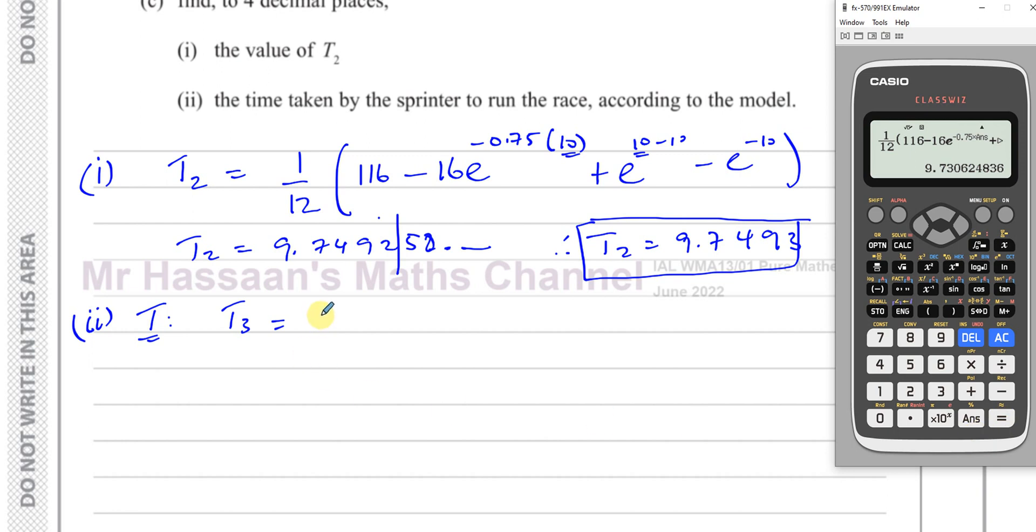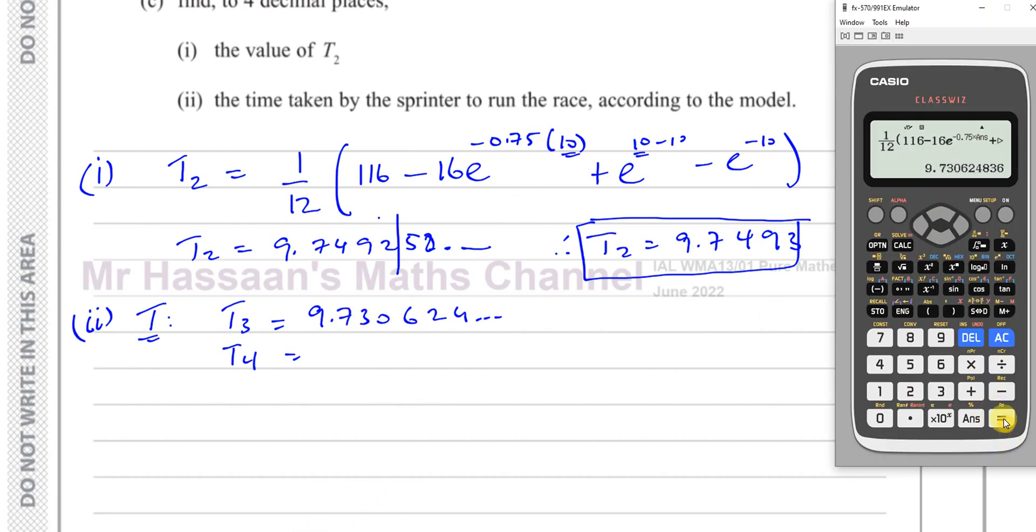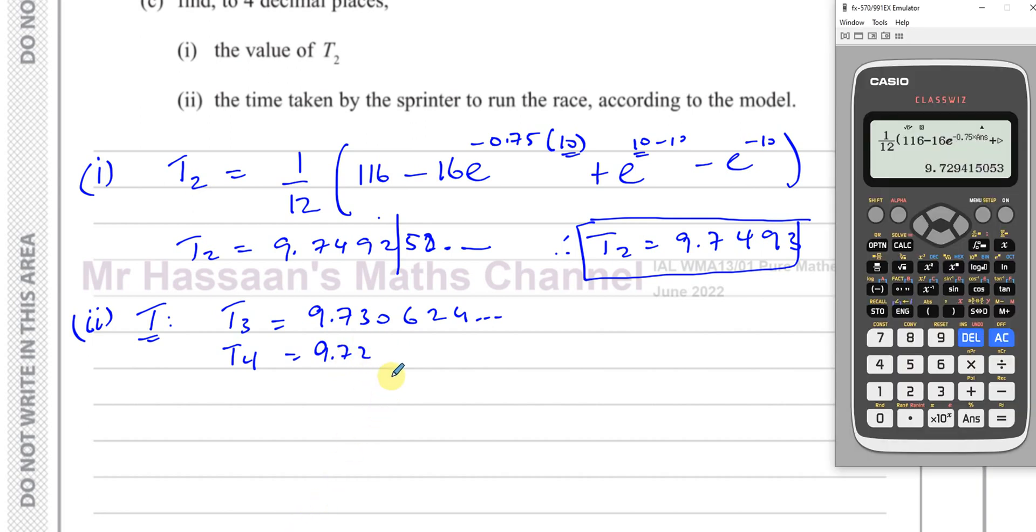So now I've got 9.730624. So I'm going to now keep on pressing equals. Now when I press again, it's going to give me T_4. Because it's going to substitute this instead of the answer. So I press equals again. It gives me 9.729415.